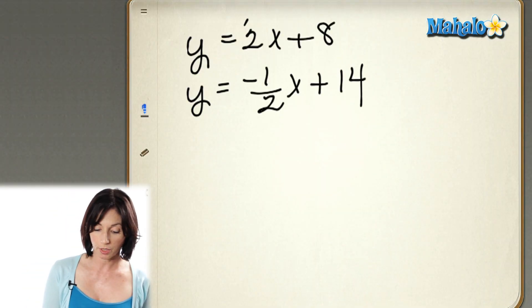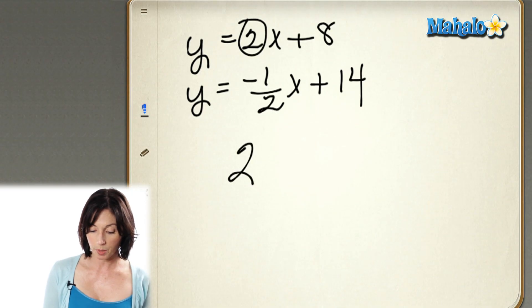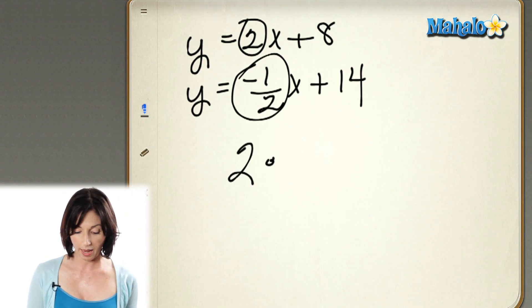Now, if you want to determine if these two lines are perpendicular to each other, multiply their slopes together. The slope of my first line is 2. And I'm going to multiply that by the slope of my second line, which is minus 1/2.